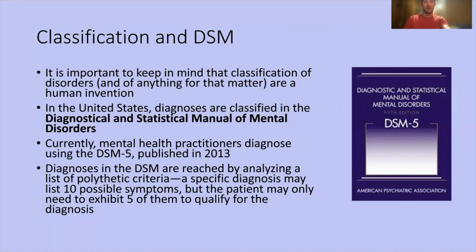Diagnoses in the DSM are reached by analyzing a list of polythetic criteria. What that means is, for example, a specific diagnosis may list 10 possible symptoms, but the patient may only need to exhibit five of them to qualify for the diagnosis. So there aren't super strict diagnostic criteria, though on certain disorders specific criteria must be met. This reflects our understanding that there is a wide range of symptoms for a specific condition that someone may or may not experience, and as of right now this seems to be the best structure for diagnosing.